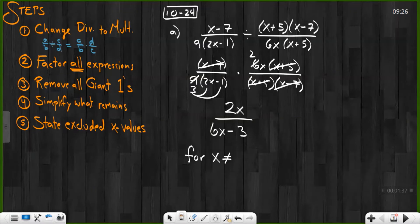In this case, x cannot be, let's look at each denominator. Here, x cannot be the opposite of 2x minus 1, which is positive 1 divided by 2, 1 half. Here, x cannot be the opposite of x plus 5. Therefore, it would be negative 5. Here, x cannot be the opposite of minus 7, which would be positive 7.